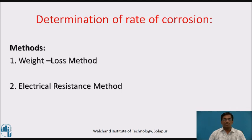Determination of rate of corrosion. Basically, there are two methods: first, weight loss method, and the second one is electrical resistance method.